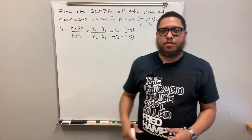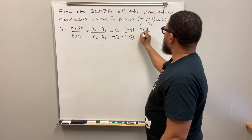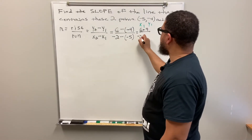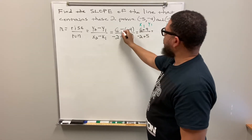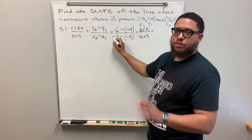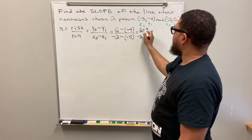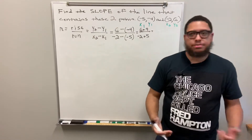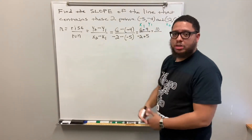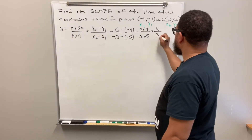Now let's do the calculation. The double negative in the numerator becomes addition: six plus four. In the denominator, negative two minus negative five becomes negative two plus five. Six plus four is ten, so our numerator is ten. For the denominator, negative two plus five: starting at negative two on the number line and moving five spaces to the right gives us three.